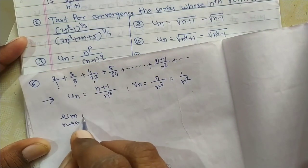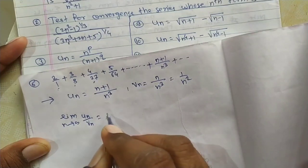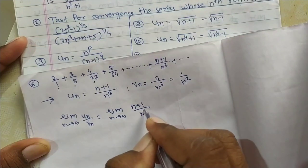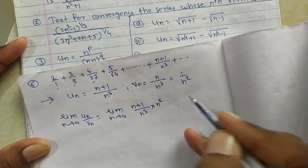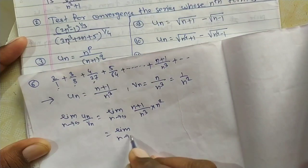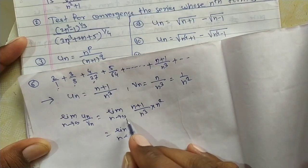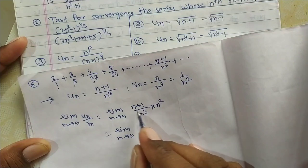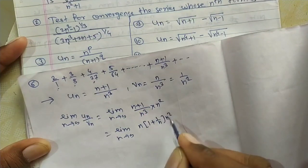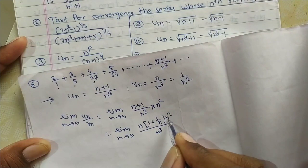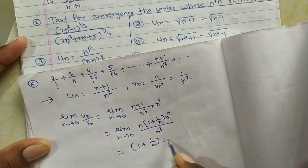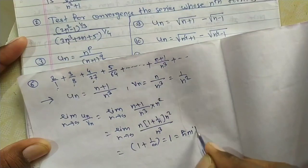Now find the limit of un/vn as n→∞. un/vn = [(n+1)/n³] × n² = n²(n+1)/n³. Taking n common from numerator: n(1 + 1/n) × n² / n³. The n³ terms cancel, so the limit becomes (1 + 1/n) as n→∞, which gives 1 + 1/∞ = 1. This limit is finite.